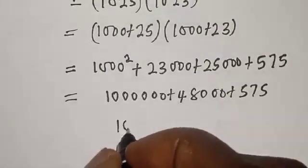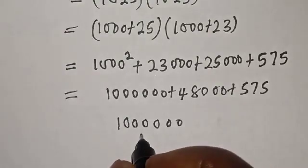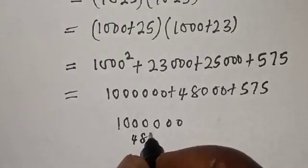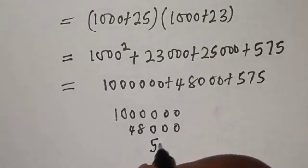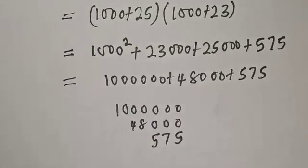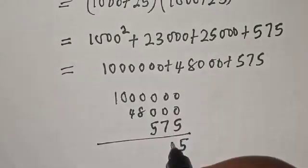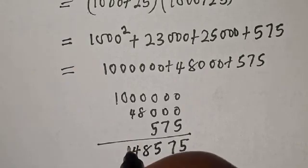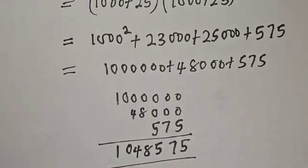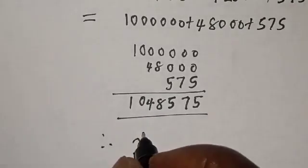Let's add everything together: 1,000,000 plus 48,000 plus 575. Here is 5, 7, 5, 8, 4, 0, 1.